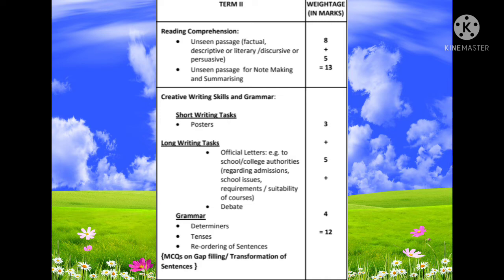Section B is creative writing skills and grammar. The short writing task includes poster writing, carrying 3 marks. For the long writing task, there are two optional options: official letters — such as letters to school or college authorities regarding admissions, school issues, requirements, or suitability of courses — and debate, each carrying 5 marks. For grammar, the same portions apply: determiners, tenses, with MCQs on gap filling, transformation of sentences, or reordering of sentences, carrying 4 marks. The total marks for section B is 12.